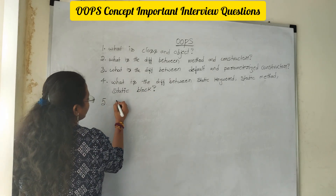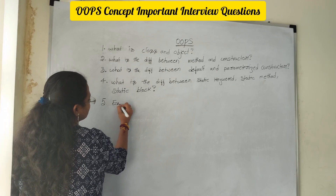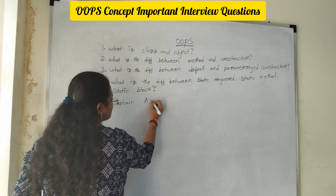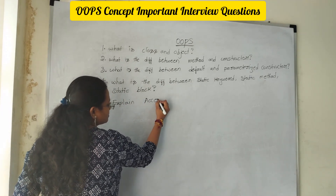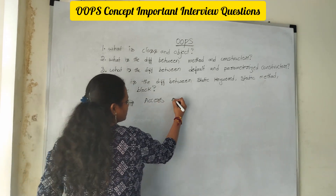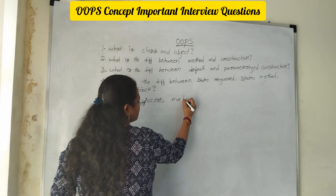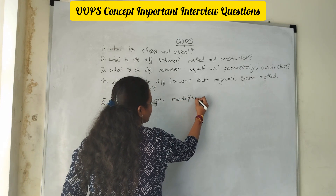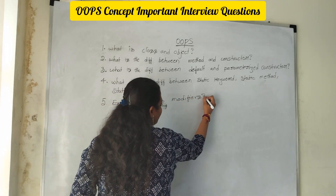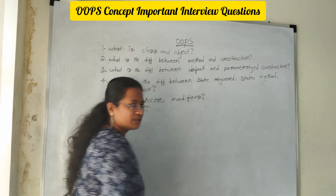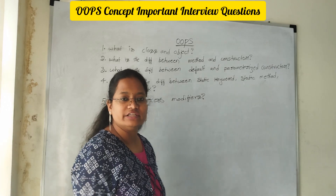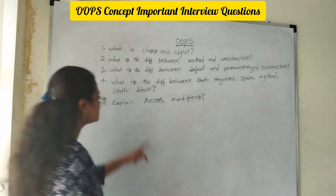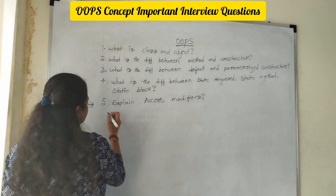Next, explain access modifiers. That means you need to explain public, private, protected, and default. You need to explain all four access modifiers.